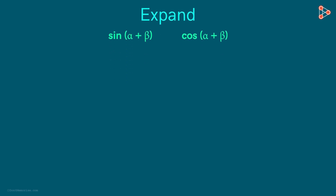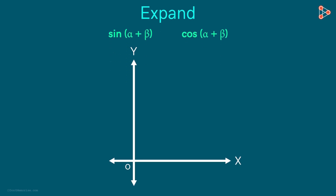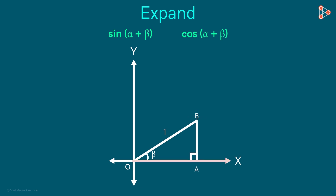Look at this diagram. This line is of length 1 unit. It makes an angle of beta with the x-axis. Let's drop a perpendicular from this point to the x-axis — we get a right triangle.